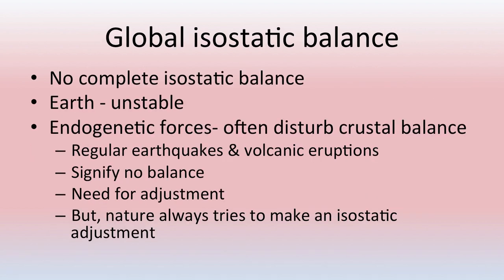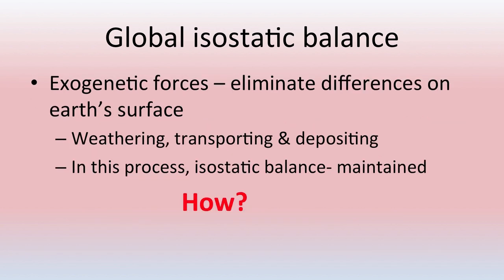Regarding global isostatic balance — there is no complete isostatic balance on the earth surface. The earth is very unstable and endogenetic forces that take place within it often disturb the crustal balance. Evidences can be seen in regular earthquakes and volcanic eruptions, which signify there is no complete balance. However, nature always tries to make an isostatic adjustment on its own. Exogenetic forces also eliminate differences through weathering, transportation, and deposition, and in this process isostatic balance is maintained.